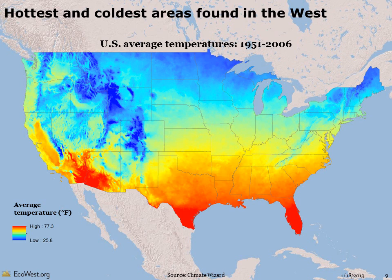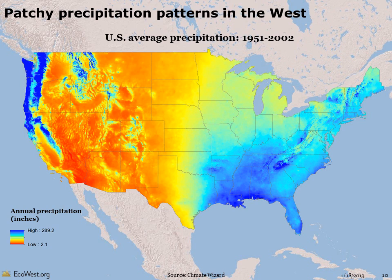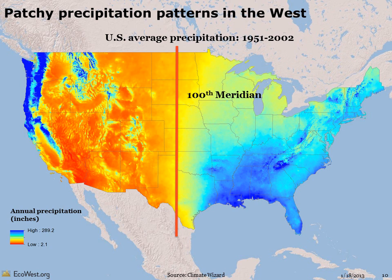Here's a close-up of the United States, showing the average temperature from 1951 to 2006. You can see that the West has some of the coldest and hottest areas, sometimes in close proximity to one another. Looking at precipitation, you can see that west of the 100th meridian conditions are generally drier, except for the Pacific Northwest and the highest mountains. What's perhaps most striking is how varied and spotty the precipitation patterns are, largely due to the influence of mountains and the rain shadows they cast.